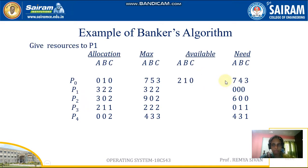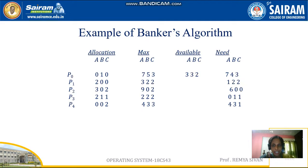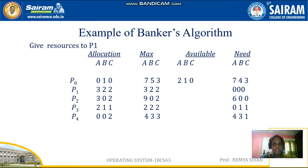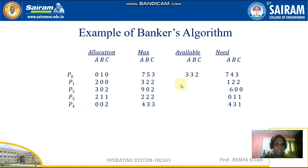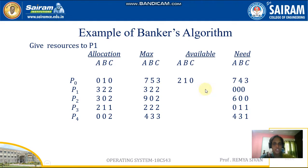So we give resources to P1. P1's need is 1, 2, 2 — we give exactly that need. Now P1 is allocated with 3, 2, 2 — whatever maximum they required. The current available becomes: 3 minus 1 is 2, 3 minus 2 is 1, 2 minus 2 is 0. So currently available is 2, 1, 0.